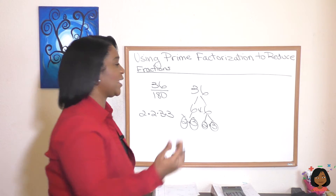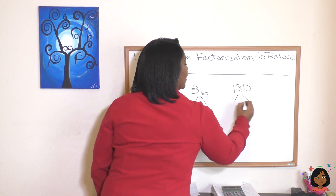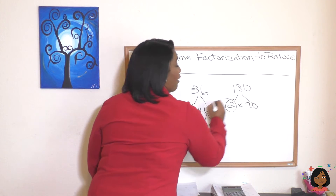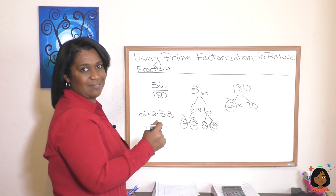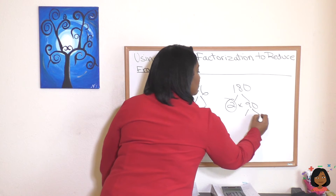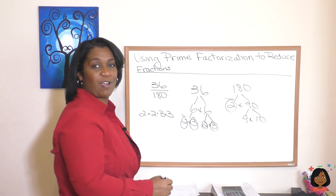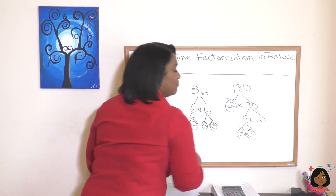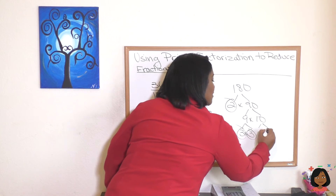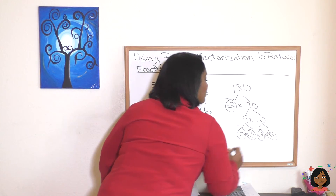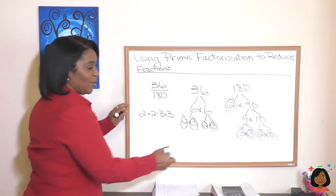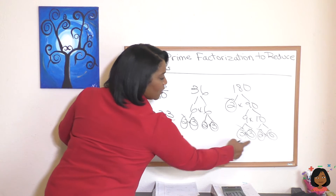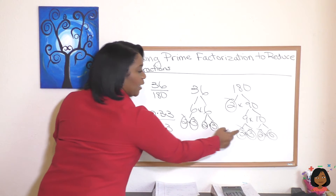Now let's prime factor 180. I'm just going to start with 2 and 90. The 2 is prime, so I can circle that, but I've got to keep going on the 90. How about 9 and 10? Neither of those are prime, so I've got to keep going. I do know that 9 is 3 times 3, and that's prime. And I do know that 10 is 2 times 5, and that's prime. So the prime factorization is 2 times 2, two 3s, and a 5.